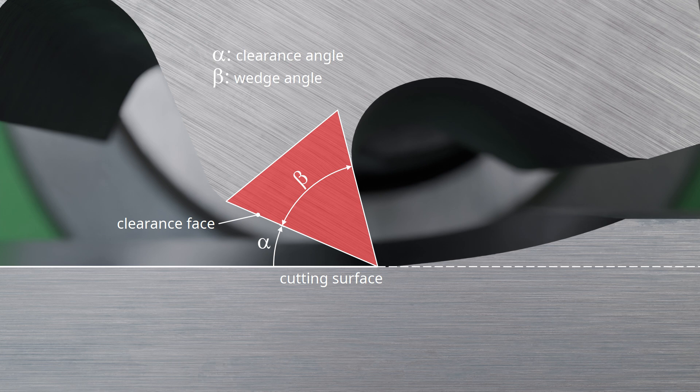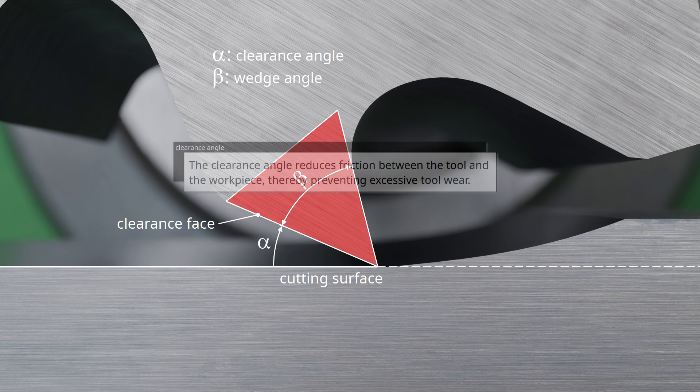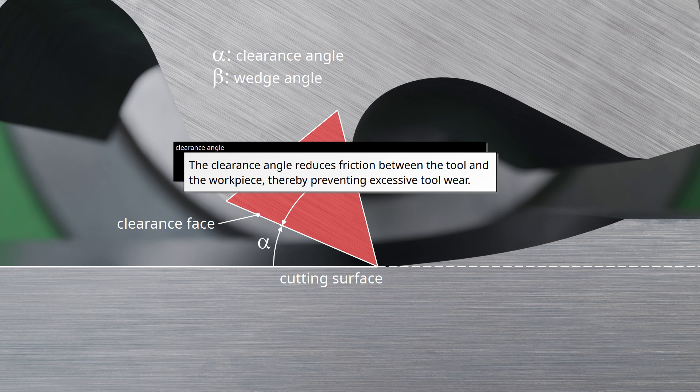This angle typically ranges between 6 and 12 degrees. For softer workpiece materials, the clearance angle is somewhat larger due to greater elastic deformation during machining than for harder materials. Note that the clearance angle reduces friction between the tool and the workpiece, thereby preventing excessive tool wear.